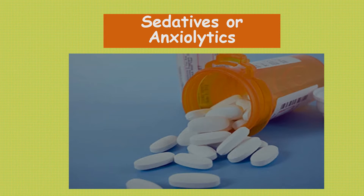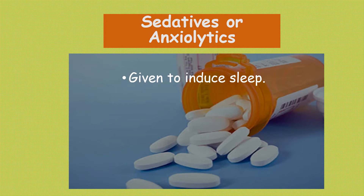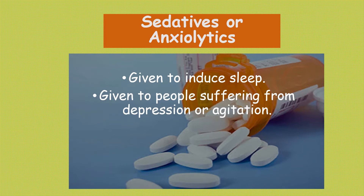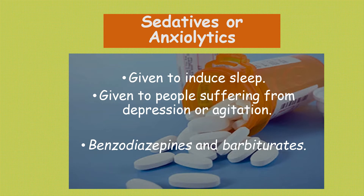Sedatives or anxiolytics are one example of narcotics. These are given to induce sleep and may be administered prior to general anesthesia for a person undergoing a surgical procedure. They may also be given to people suffering from depression or agitation. Examples of sedatives and anxiolytics are benzodiazepines and barbiturates. Short-term effects are grogginess and relaxation, with overdose leading to cessation of breathing. Long-term effects include tolerance, and abrupt withdrawal can lead to life-threatening seizures.